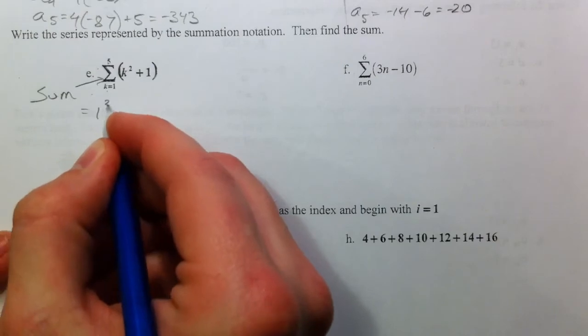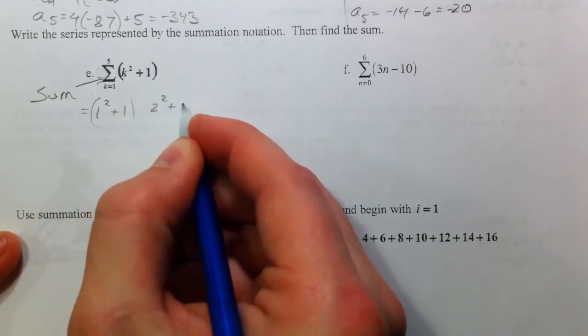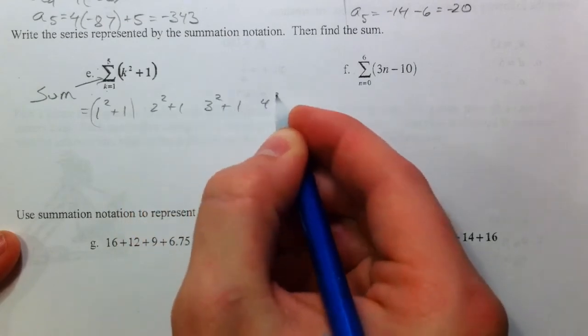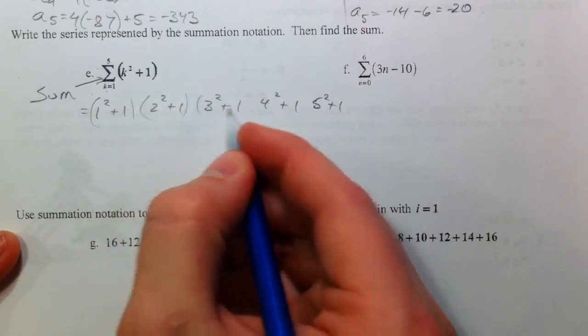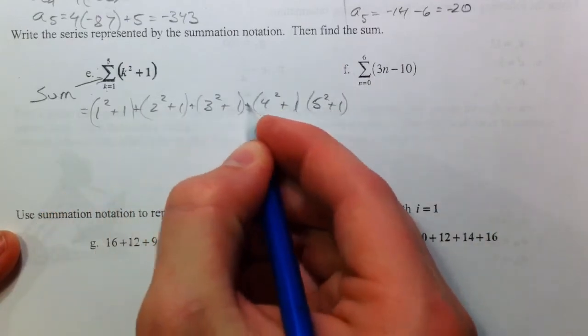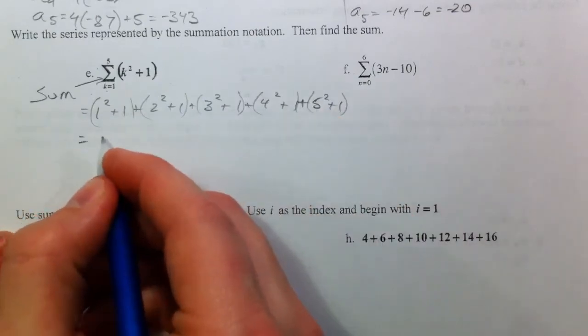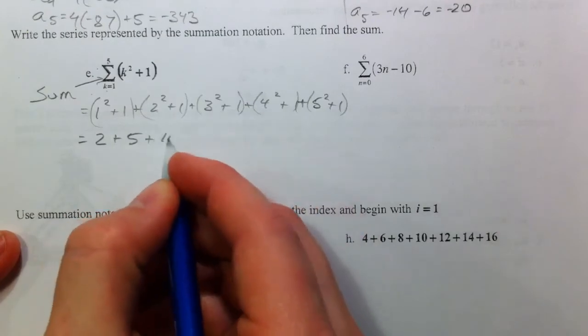So, 1 squared plus 1, 2 squared plus 1, 3 squared plus 1, 4 squared plus 1, and 5 squared plus 1. All of these are the 5 terms, and we're going to add them together. So, 2, 4 plus 1 is 5, 9 plus 1 is 10,